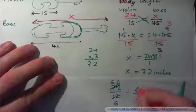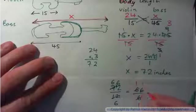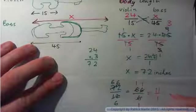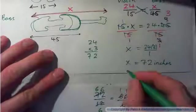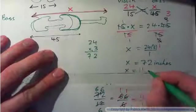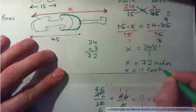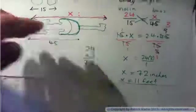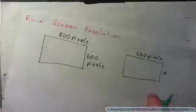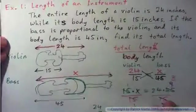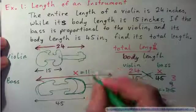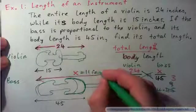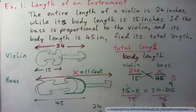Now, 6 into that goes once. 6 into that goes once. And 6 into that goes once. So we get 11 over 1, or 11. Right? So x equals 72 inches, or x equals 11 feet. Right? Let's have a look at example 2. The length of the bass, of course, is 11 feet, or 72 inches.